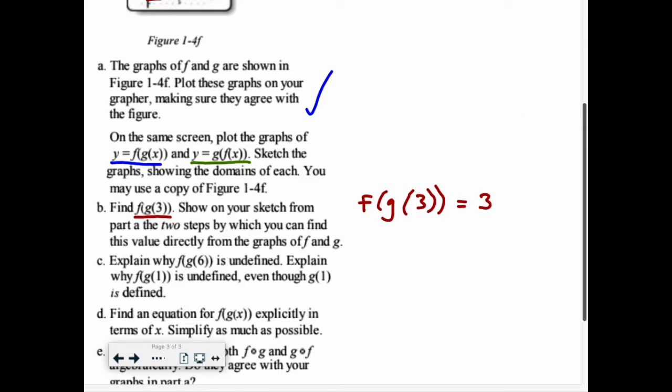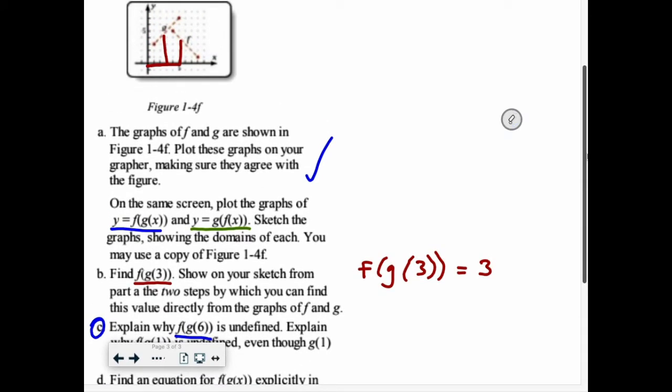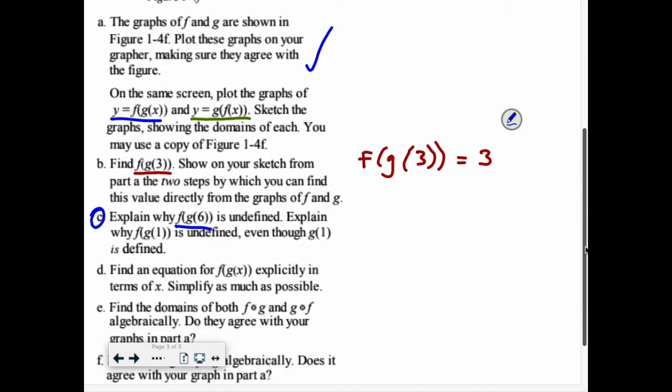Now, this next one, this is what we were talking about with the restricted domain, part C. Explain why f(g(6)) is undefined. Well, let's go take a look at our sketch. If I go out to 6, 1, 2, 3, 4, 5, 6, and then go up, I don't hit F. Because I don't hit F, I can't apply the function F to the composite function. So, 6, not in domain of G. That explains why f(g(6)) is undefined. We can't throw something through that composite function because it doesn't satisfy both functions.